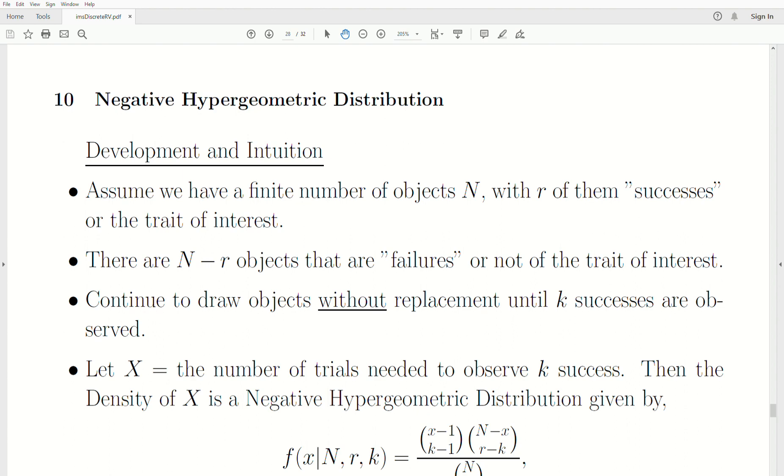To contrast it with the Negative Binomial Distribution, both are going to sample observations until you have a certain number of successes, or observe the trait of interest so many times.